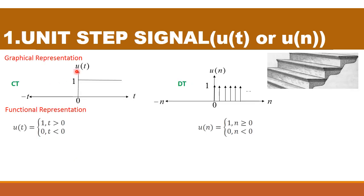First, we are going to see the unit step signal, u(t) or u(n). Here, unit represents that its magnitude value is equal to 1, and we call it step because the signal shape is in the form of steps. It is represented as u(t). For unit step signal, from 0 to infinity its value will be equal to 1, and from 0 to minus infinity its value will be equal to 0. So the condition is: u(t) = 1 for t ≥ 0, and u(t) = 0 for t < 0. This is for the continuous time case.